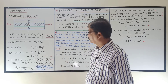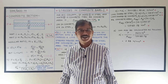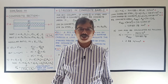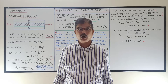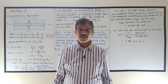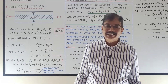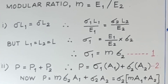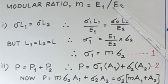Now let us see what is meant by modular ratio. Modular ratio is the ratio of the modulus of elasticity of one material to the modulus of elasticity of the other — specifically, the larger value of E divided by the smaller value of E. So here, modular ratio M equals E1 upon E2.